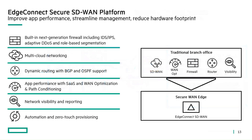Let's take one last look at the EdgeConnect platform and recap the services we've covered: the built-in next-generation firewall allowing you to replace a traditional branch firewall; app performance benefits that accelerate SaaS application connectivity; WAN optimization; and path conditioning features. We also have network visibility and reporting for a complete view of your entire SD-WAN fabric across all locations, and automation with zero-touch provisioning so you can deploy and onboard a new location within minutes. This is the EdgeConnect SD-WAN platform.